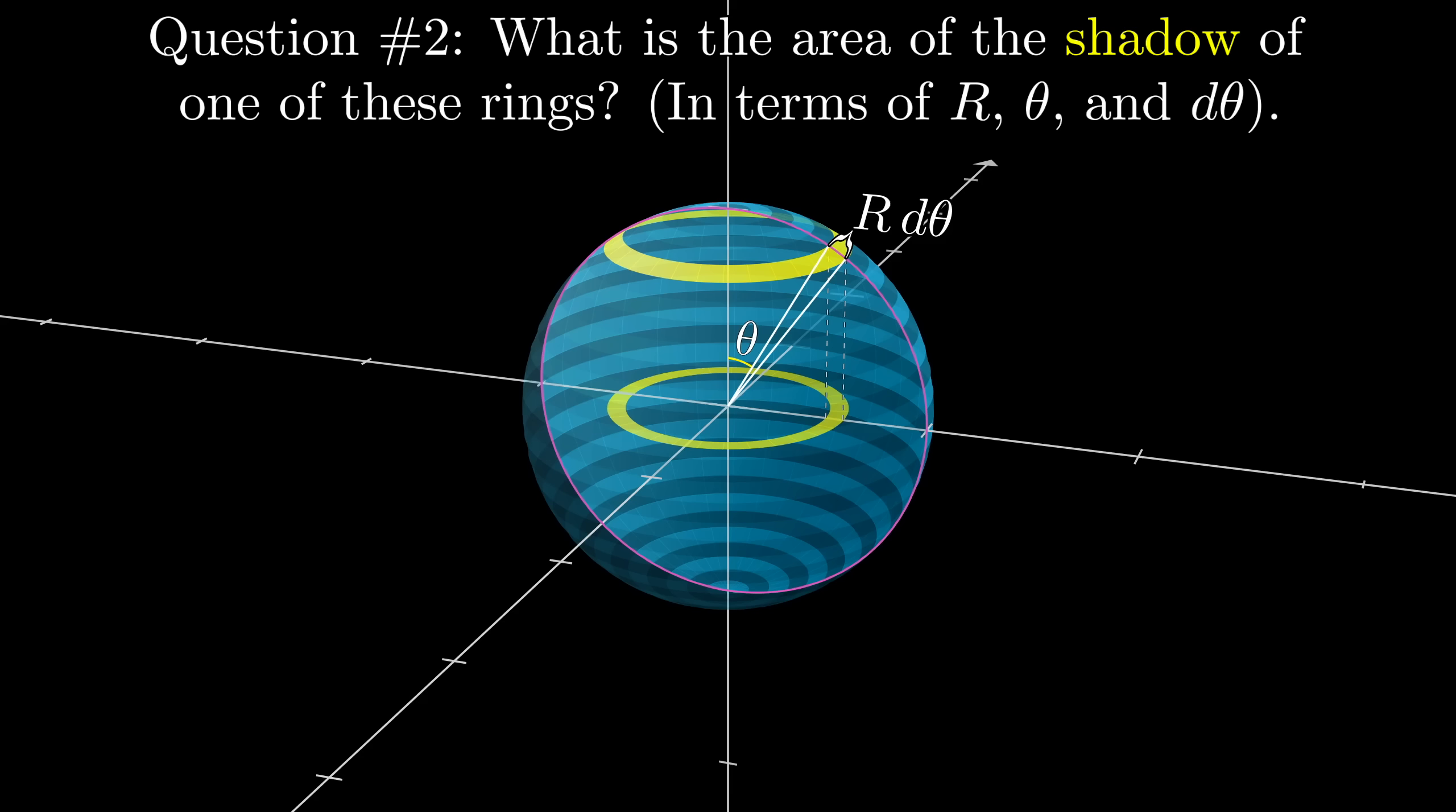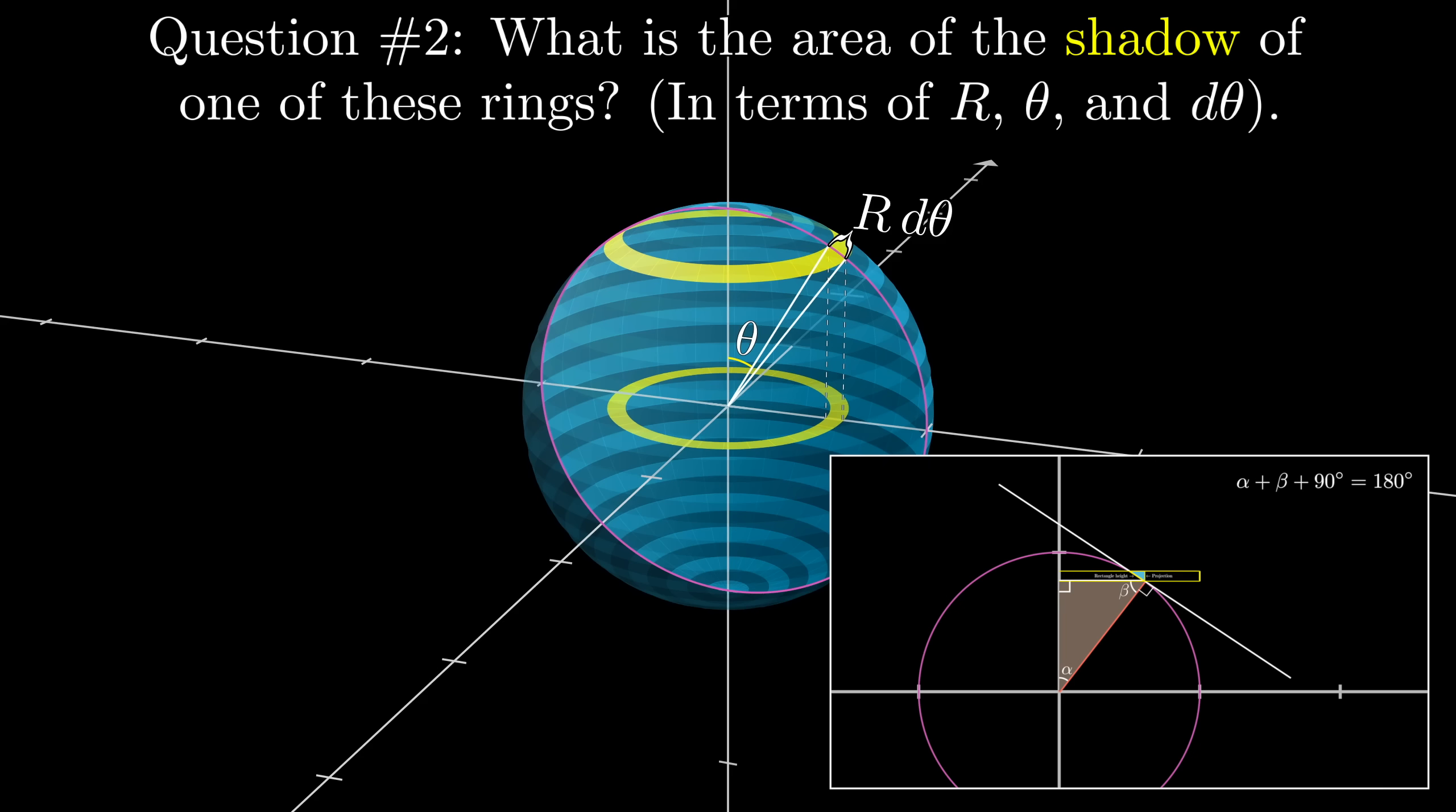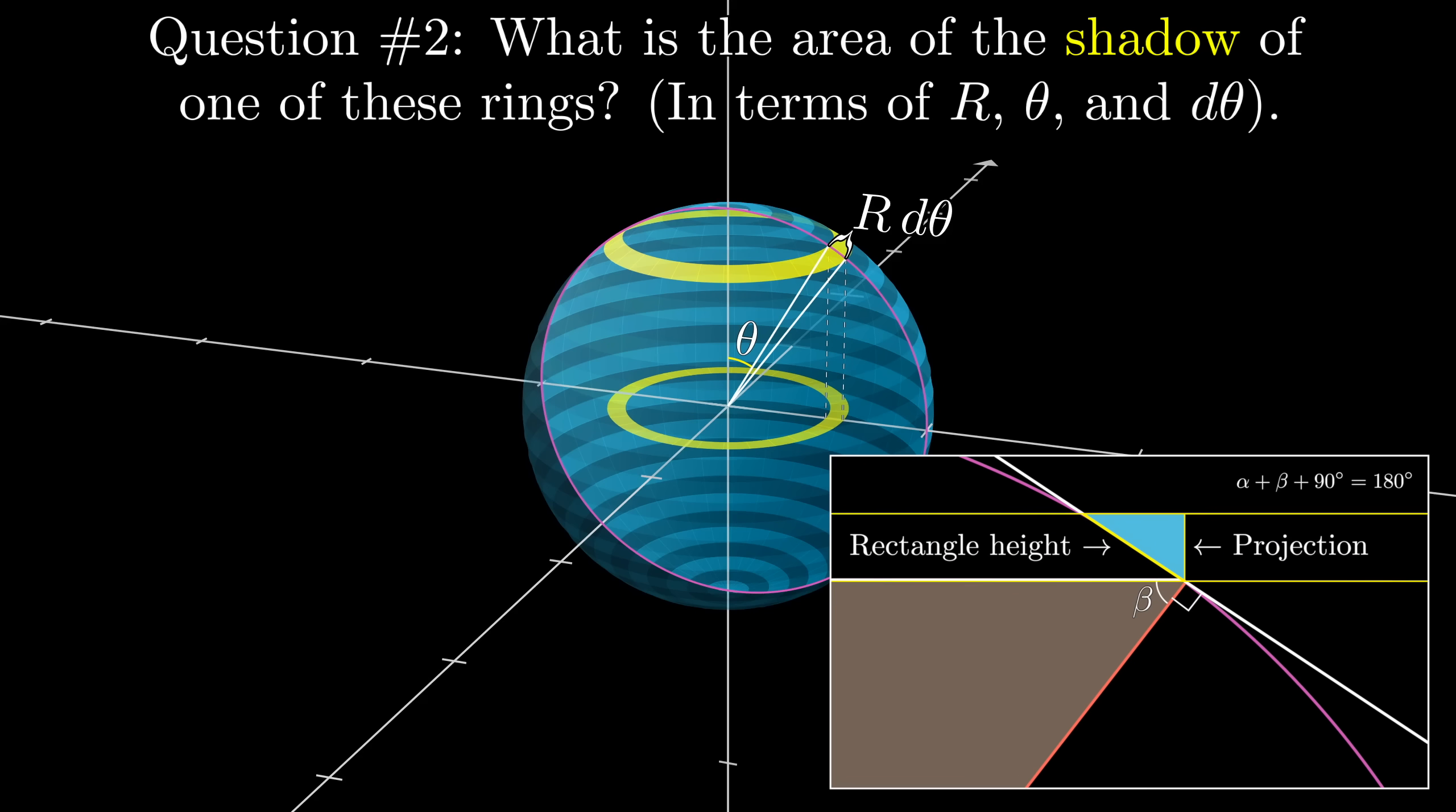Again, expressed in terms of r, theta, and dθ. And for this one, it might be helpful to think back to that tiny little right triangle we were talking about earlier.